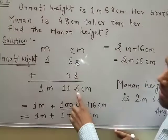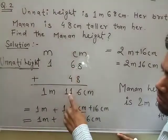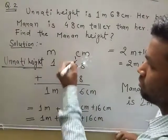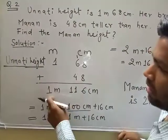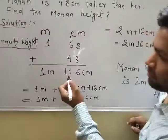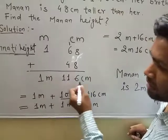So 8 plus 8, 16, 6 plus 4, 10 and 1 carry forward. So we can add 11, and here is 1 meter to 1 meter. So 1 meter 116 centimeter.